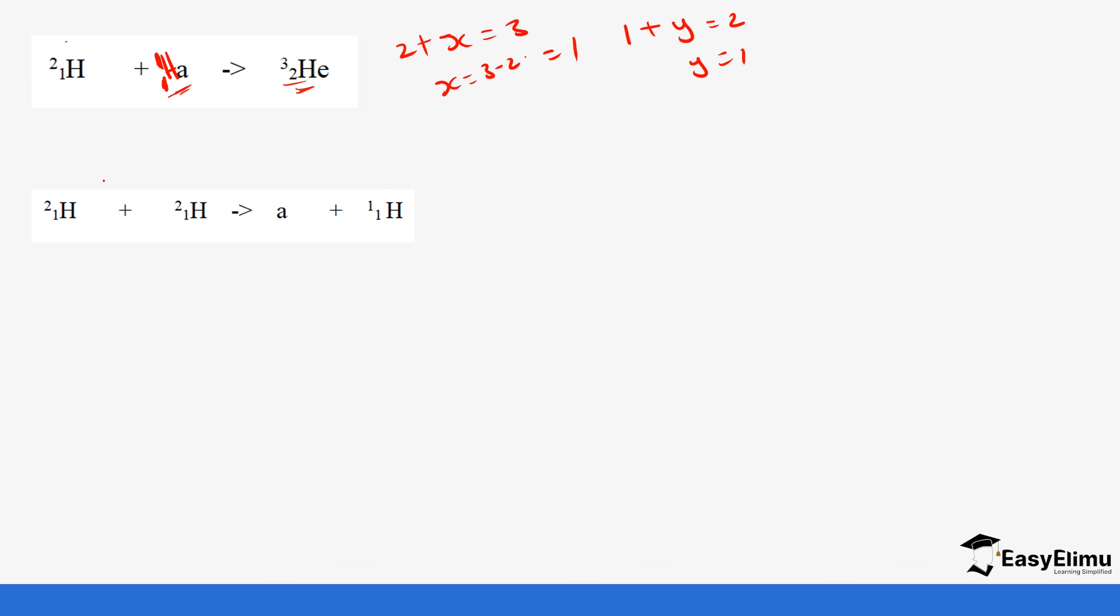Then we have this reaction now we are bombarding these two hydrogens to form this product. So one of the product has mass number of one so if we take the total two plus two we form four, four minus one is three so this is going to be three and then one plus one is two and then we have one so it is two minus one which gives us one.